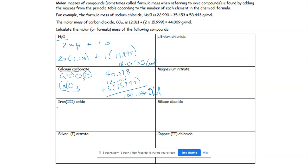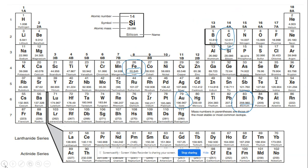Iron(III) oxide: iron is Fe and the Roman numeral III tells us the charge is plus three. Oxide is oxygen with a charge of minus two — those don't balance. The least common multiple of three and two is six, so I need two Fe's to make a positive six and three O's to make a negative six. The formula for iron(III) oxide is Fe₂O₃.